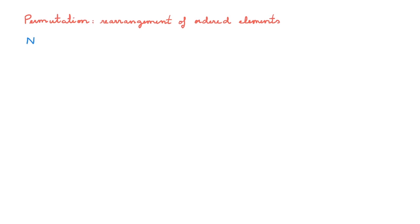To study permutation operators we need to start by looking at what a permutation is. Loosely speaking, a permutation is a rearrangement of a sequence of ordered elements. To look at a concrete example, let's consider a permutation of three elements. The permutation is typically represented by the symbol P, then we list the elements 1, 2 and 3 in order, and the permutation rearranges these elements to, for example, this new order 3, 1, 2.